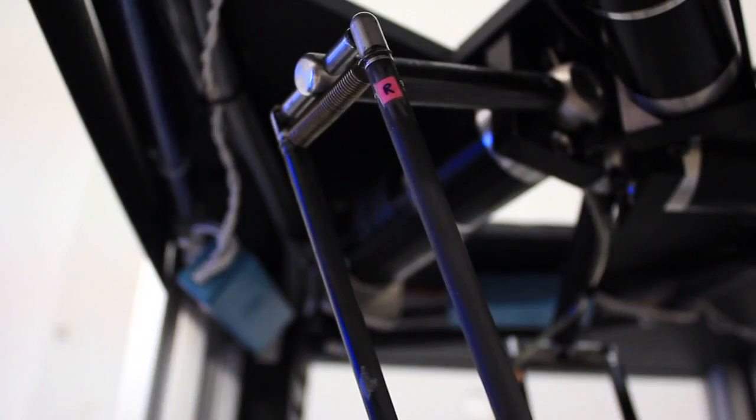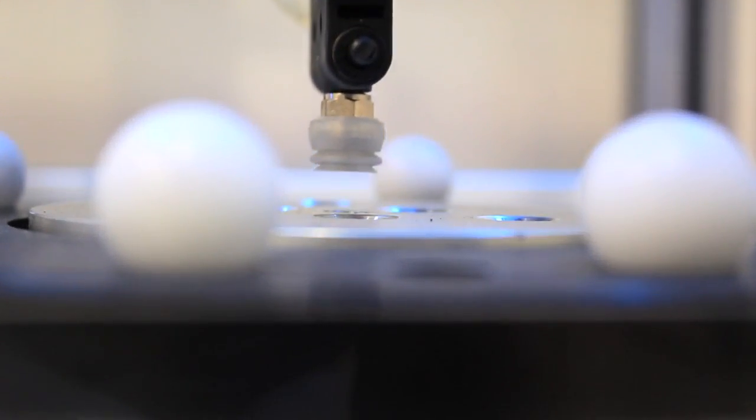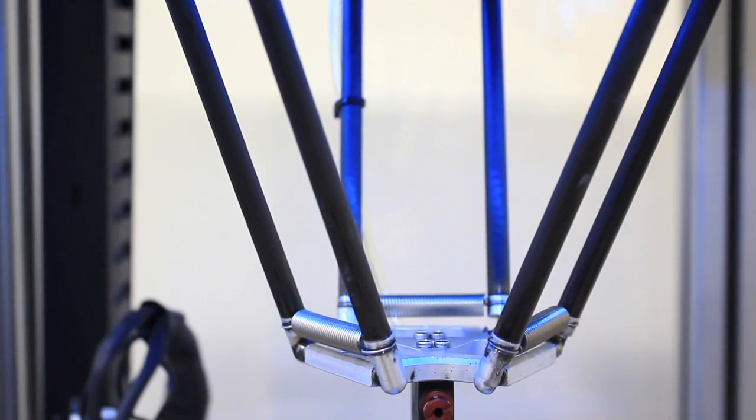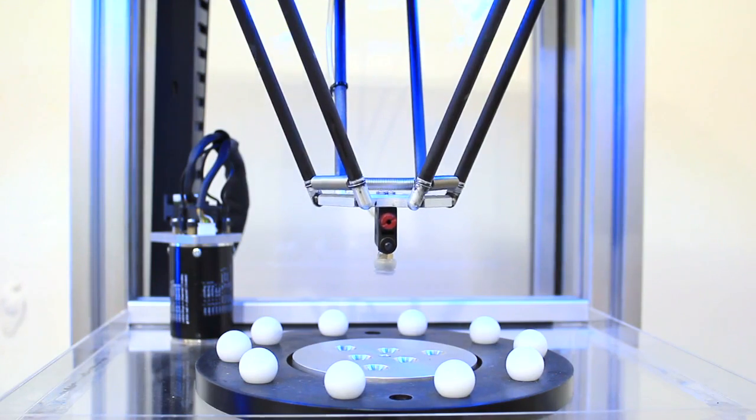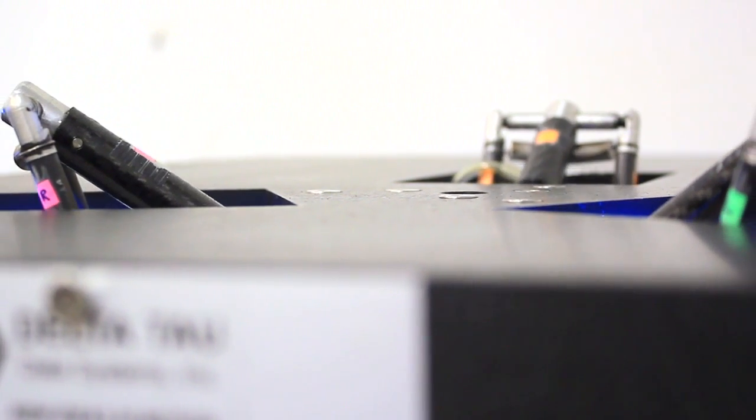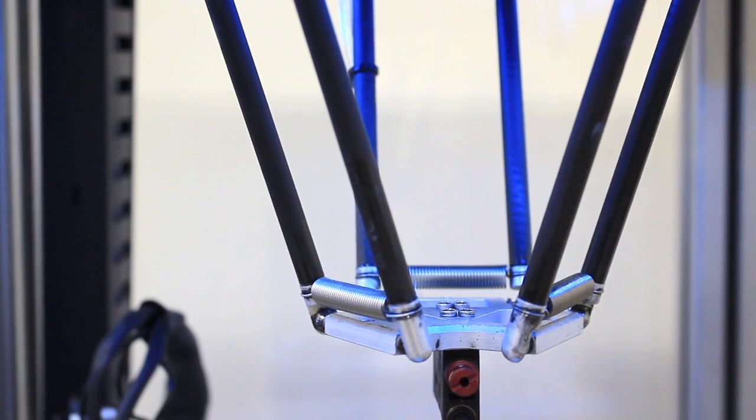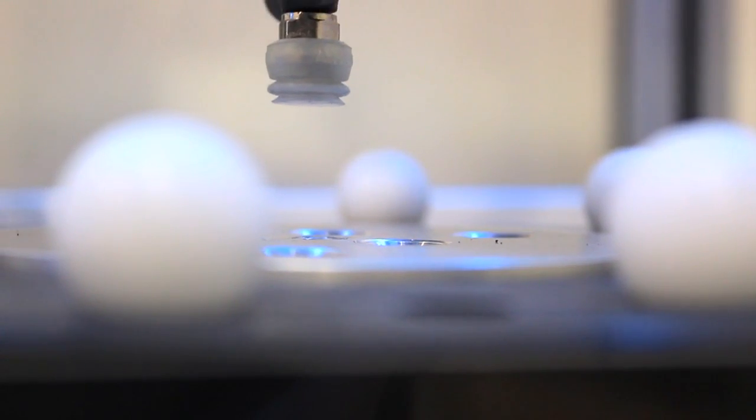The first demo uses a Delta robot. This is a popular type of robot often used in pick-and-place applications, consisting of three arms working in parallel. The mechanism converts the rotary motion of the three motors, mounted 120 degrees apart on a circle, into three degrees of purely translational motion at the end effector.